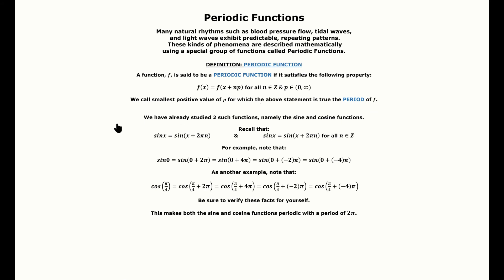We've already studied two periodic functions: both sine and cosine exhibit this quality with the constant p greater than zero being 2pi. Both of these statements have been described previously, and we'll soon learn about trigonometric identities where we'll be able to prove these statements as well.